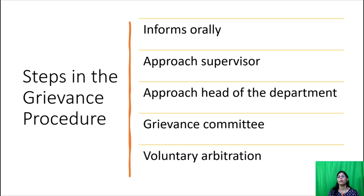Steps in the grievance procedure. At the outset, an aggrieved worker shall approach the foreman and inform his grievance orally and seek the redressal of his grievance. If it is not redressed to his satisfaction, he approaches the supervisor, who has to give a reply to the complaint within 48 hours. At the third stage, the worker can either in person or accompanied by a departmental representative approach the head of the department, who has to give an answer before the expiry of three days.